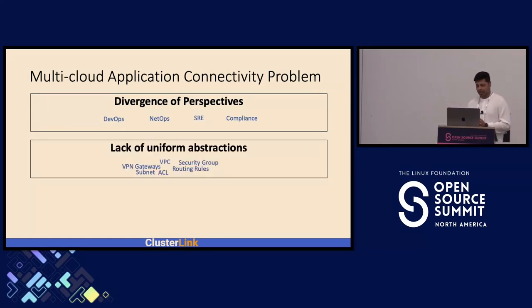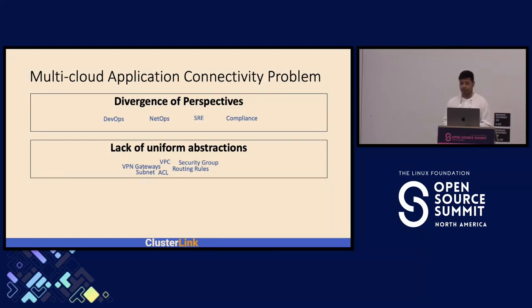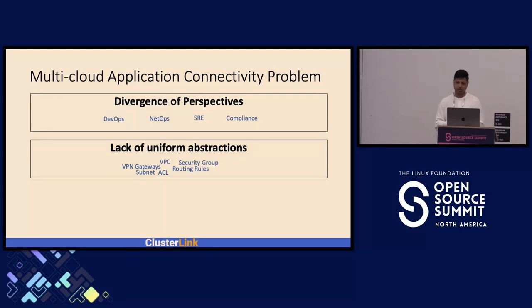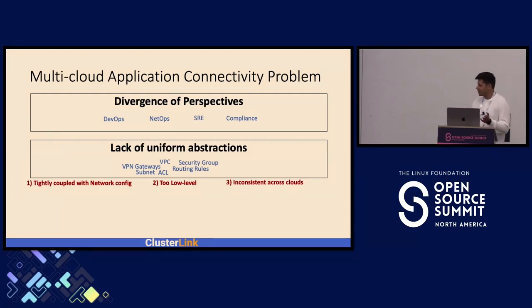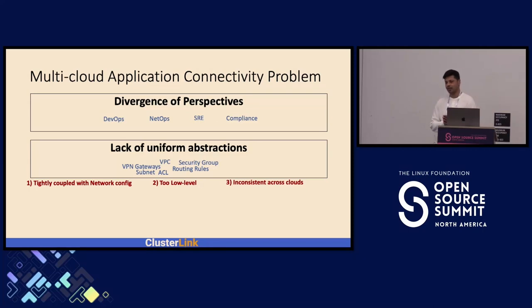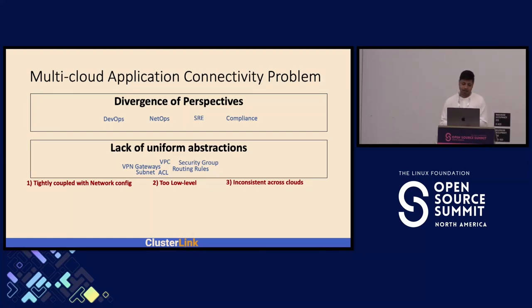Second is the lack of adequate or uniform abstractions. Today, to connect workloads deployed across public clouds like AWS, GCP, or IBM, the application developer would need to create a VPC, deploy VPN gateways, allocate subnets for the VPNs, and configure routing tables to make sure the VPN gateways are reachable. The resulting problem is that the deployment is very tightly coupled with the network configuration, and these abstractions are too low-level, defined in terms of IP addresses and ports, which could often change and require a lot of maintenance. Additionally, these abstractions are inconsistent across clouds, involving a steep learning curve.